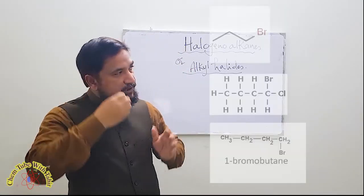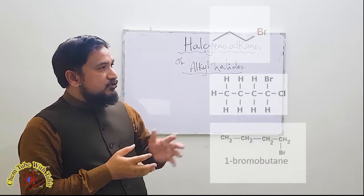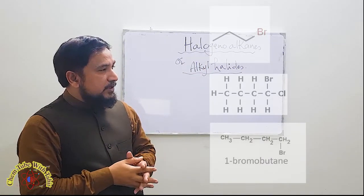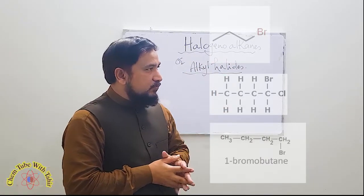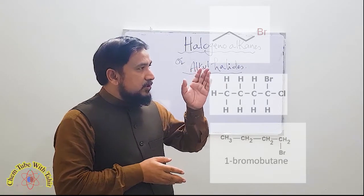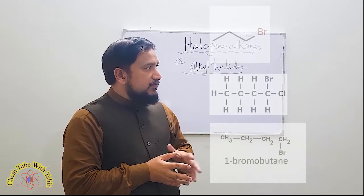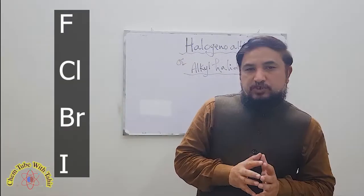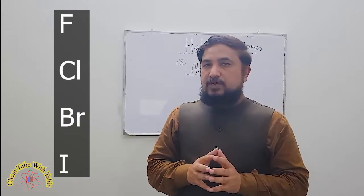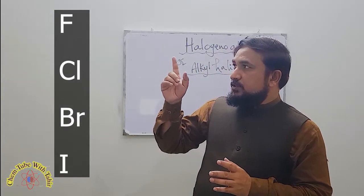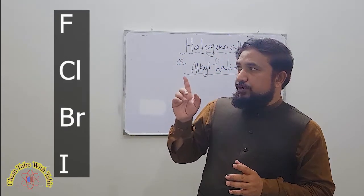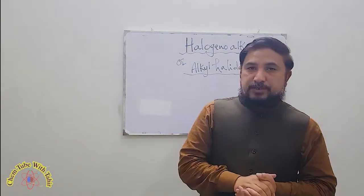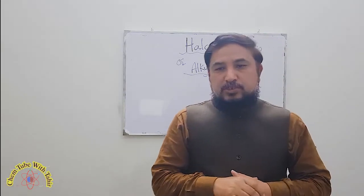You can see here some examples of haloalkanes. Here you can see the structural formula of one haloalkane. You can see the displayed formula of a haloalkane. The functional group of a haloalkane is the halogen — it may be fluorine, it may be chlorine, it may be bromine, it may be iodine. So these are the functional groups of haloalkanes.